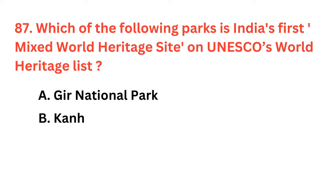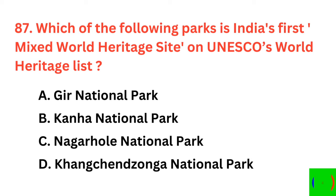Which of the following national parks is India's first mixed world heritage site on UNESCO's World Heritage List? The correct answer is option D: Kanchenjunga National Park. The national game of Bhutan is?